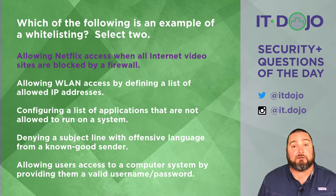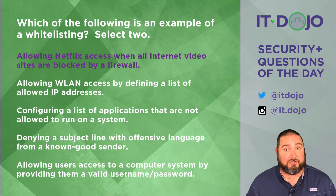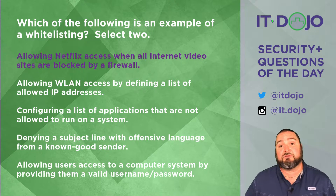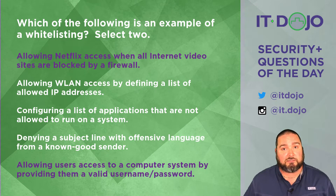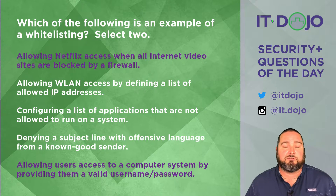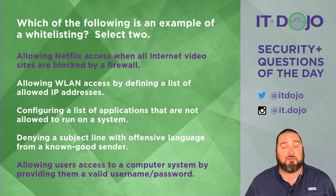How about denying an email message that has a subject line with offensive language from a known good sender? No — you're denying, so you're not whitelisting anything. That's not the right answer either. The last answer, which may seem bizarre to some people, is allowing a user to access a system by providing them with a valid username and password. Very much — you're whitelisting. Who's allowed to log into your computer by default? Nobody — until you create a username and password, thereby putting them on the whitelist. Usernames and passwords are a form of whitelisting, because the behavior of pretty much every modern operating system is that nobody's allowed access unless they are explicitly allowed access. That is very much a definition of how whitelisting works.